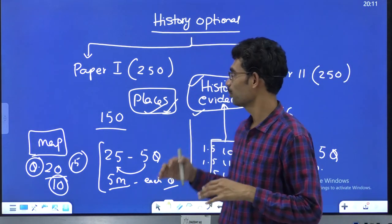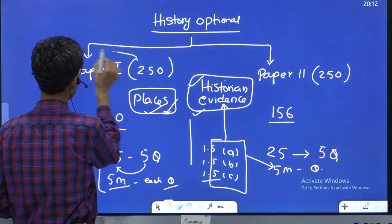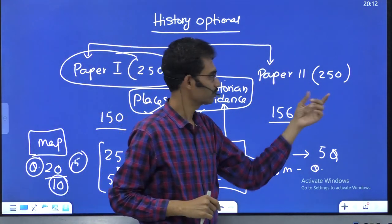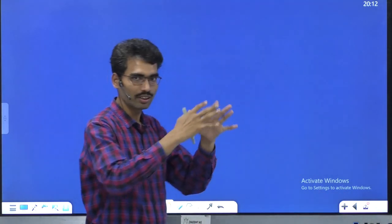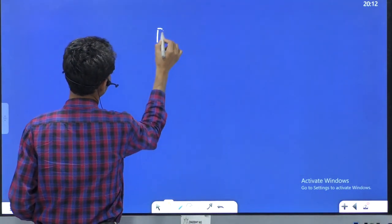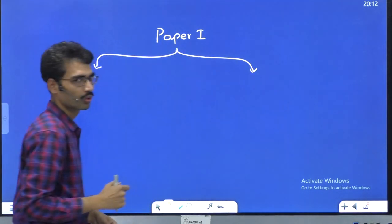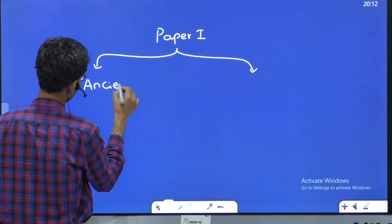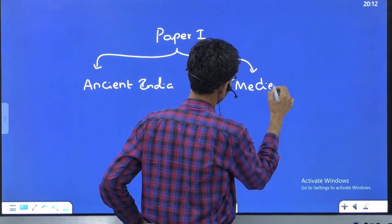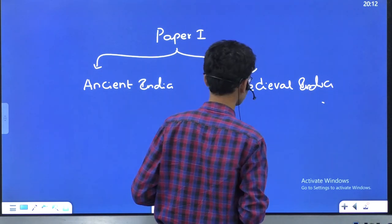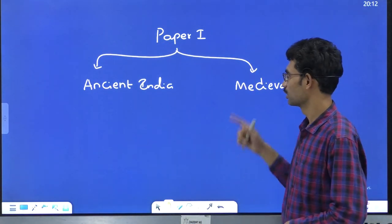This approach is one aspect to understand before analyzing the exact syllabus. In today's class we will see Paper 1, which is 250 marks. In the next class we will see Paper 2. Paper 1 broadly has two parts: one is Ancient India and the other is Medieval India.